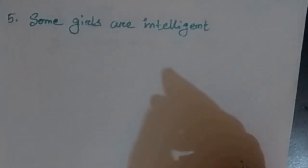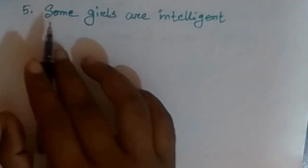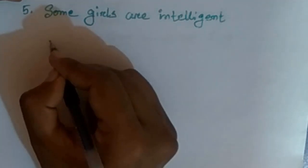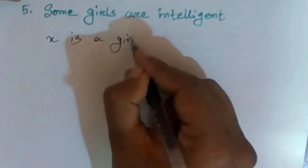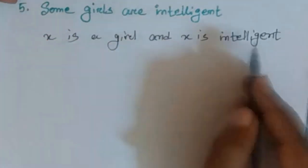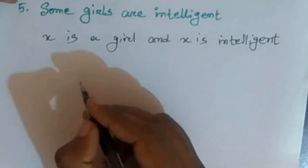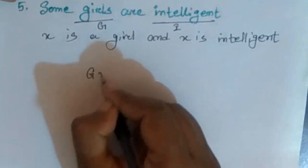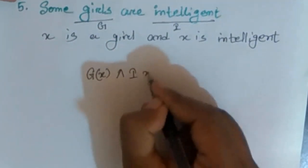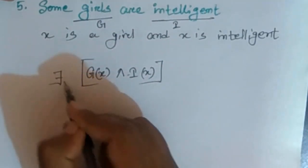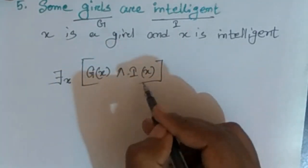Now the existential quantifier example: 'Some girls are intelligent.' Girls are represented as G and intelligent as I. So we write G(x) and I(x) — x is a girl and x is intelligent. This means: there exists some x such that x is a girl and x is intelligent.